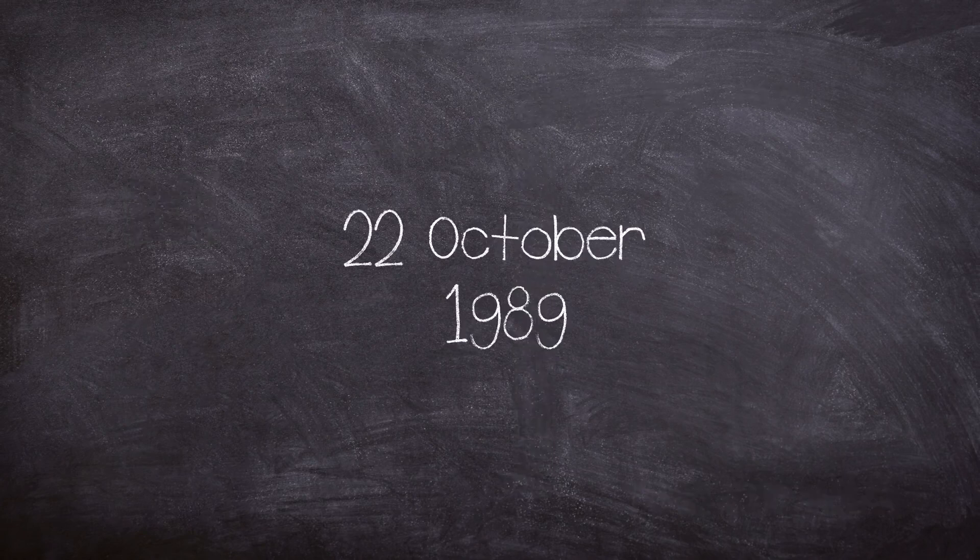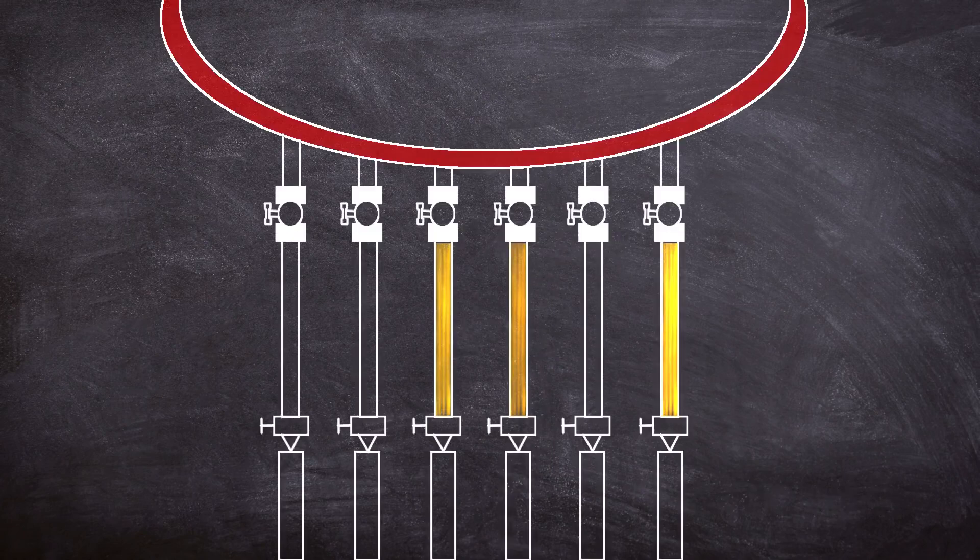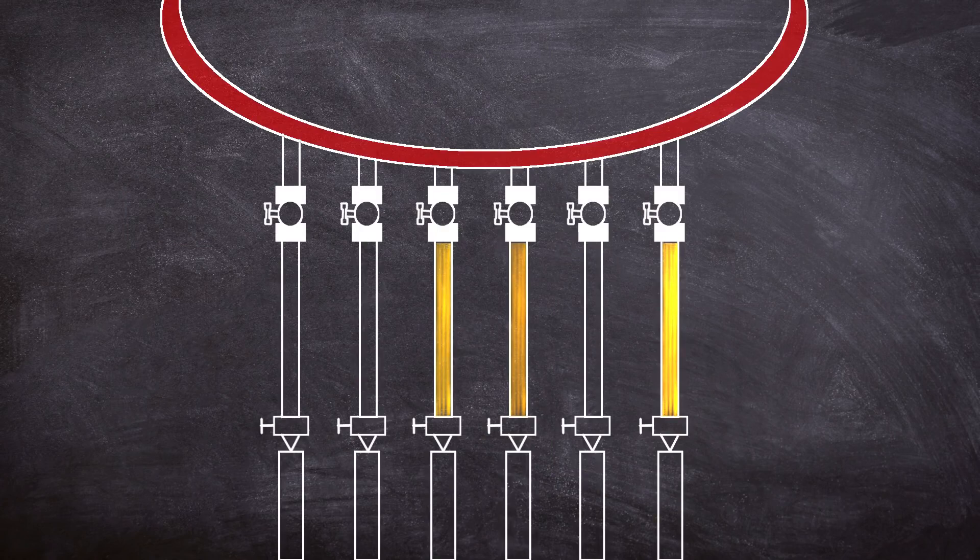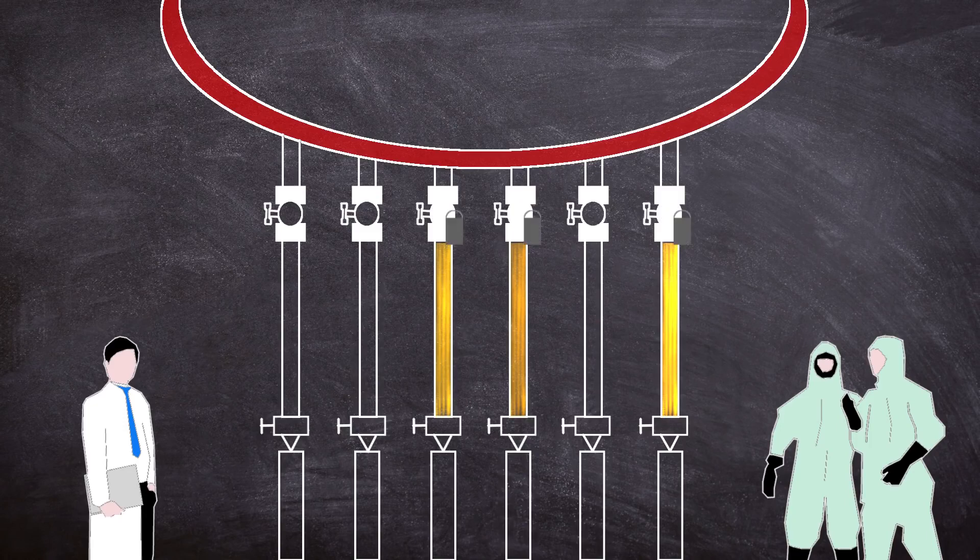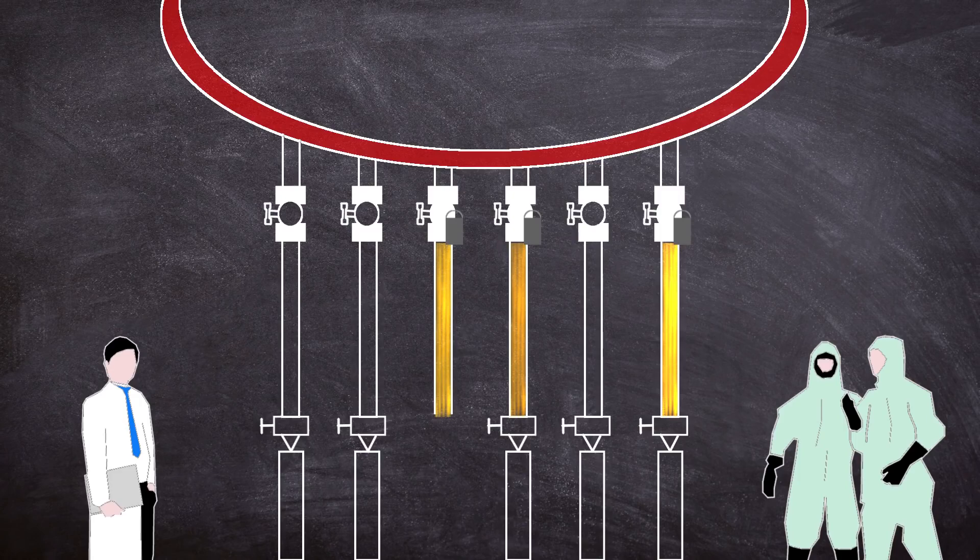This leads us to the 22nd of October 1989. Three of the six settling legs in reactor 6 in plant 5 were plugged. As had been done before during production operations, personnel isolated the settling legs according to the alternative isolation procedure, closing the 8-inch ball valve, locking them, and disconnecting the air hoses. The first was disassembled and had its fluff removed relatively easily by the contractor. This happened whilst the reactor was still in operation.